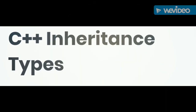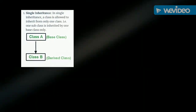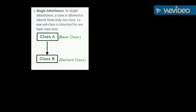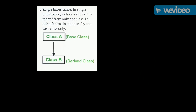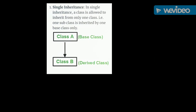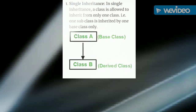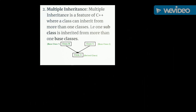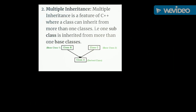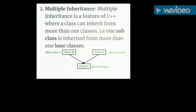Now, types of inheritance. There are five types of inheritance. First is single inheritance — single inheritance means one base class and one derived class. The second type is multiple inheritance. When we inherit two or more classes into a single class, that is called multiple inheritance.